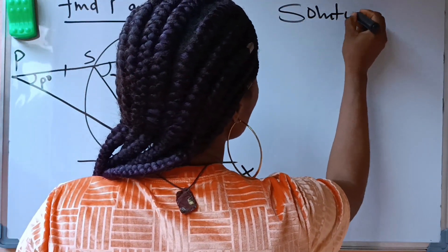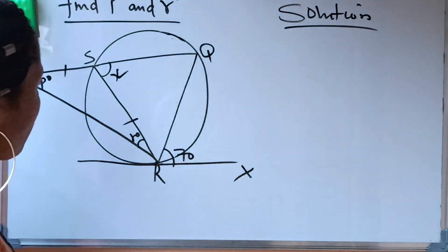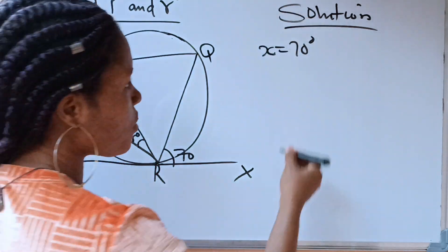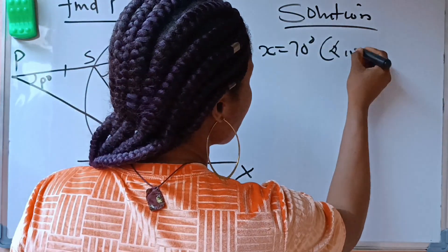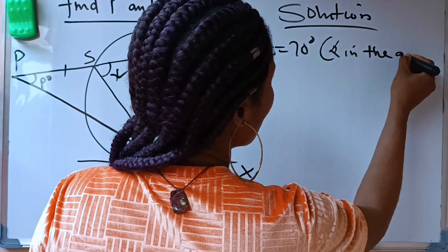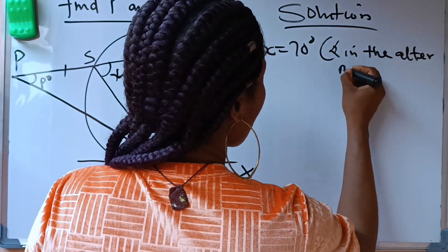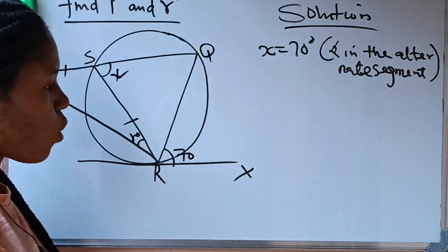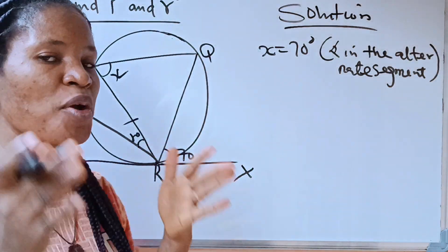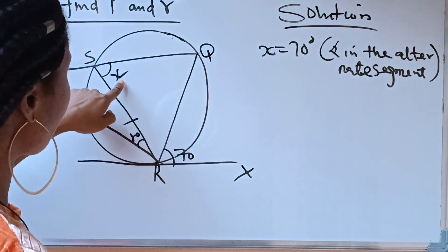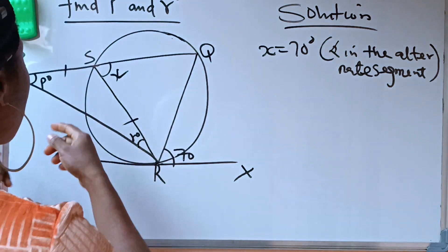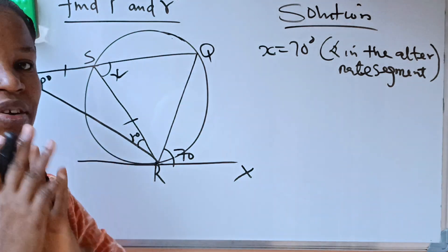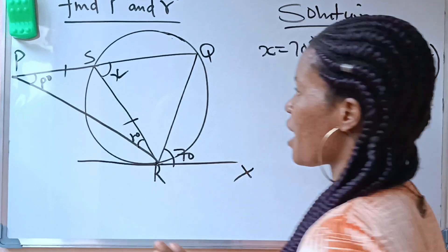So our x is equal to 70 degrees. The reason is: angle in the alternate segment. Now that we have this angle, we can find the remaining one to get p and r. We have succeeded in establishing this place as 70 degrees.